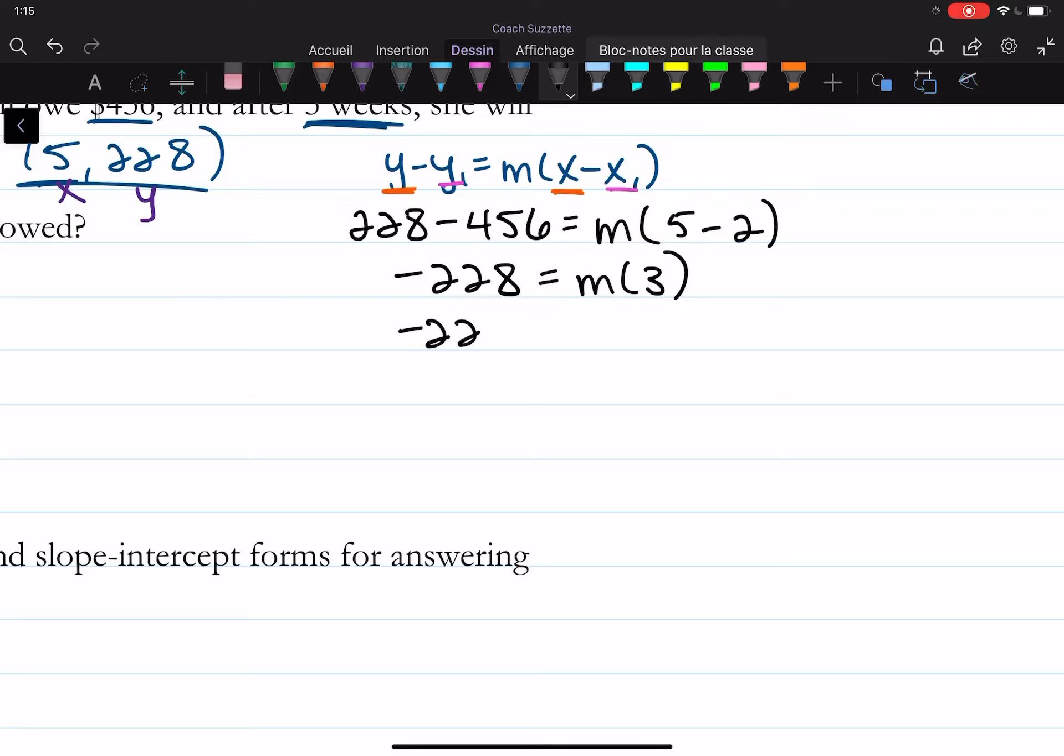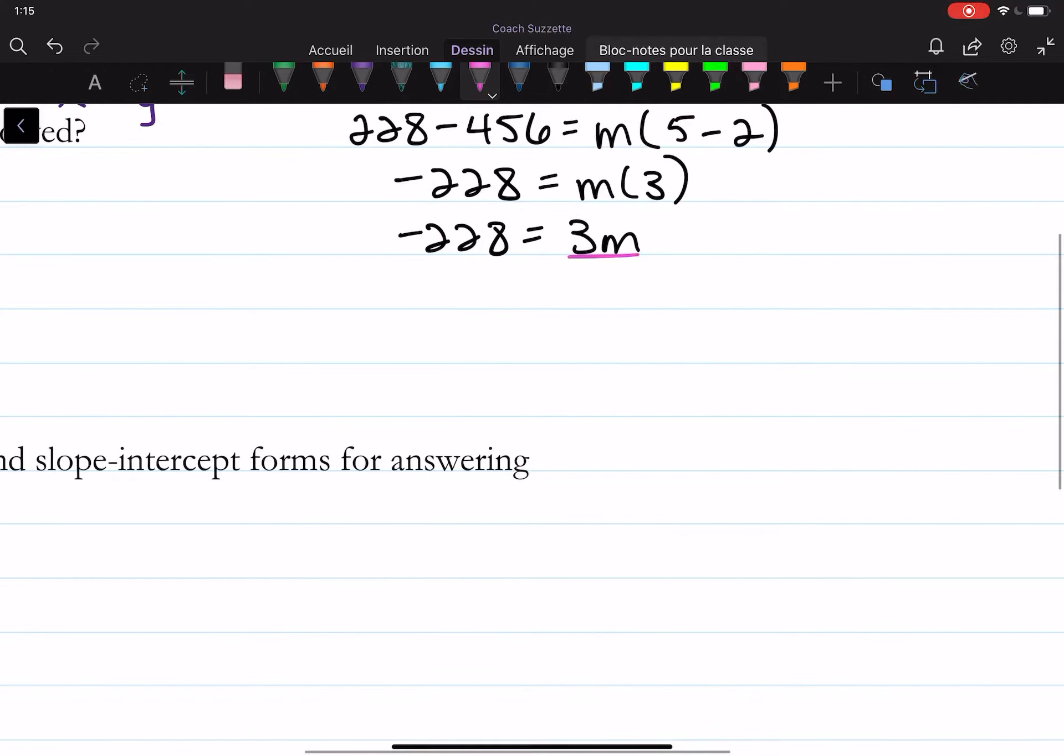Okay, that looks like this. And to solve for m, divide both sides by 3, then we get that m is equal to negative 76.